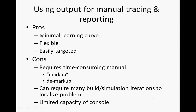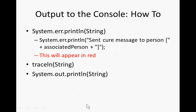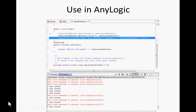Using output is the normal technique used most commonly for debugging. It's extremely lightweight, very flexible, easily targeted, and has a minimal learning curve. On the other hand, it requires a little markup — you have to paste in print statements — and it can require many iterations to localize the problem. You also have to deal with the limited capacity of the console. You print out things, sometimes in red using system.err.println, or in black using traceln. You put those around your code and see which are hit prior to the error, and use them to report on the values of variables.